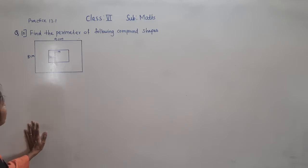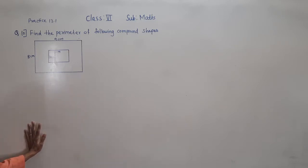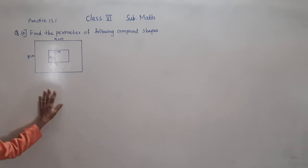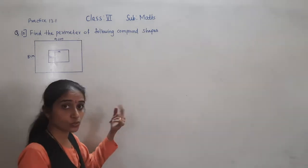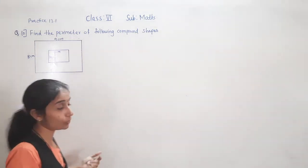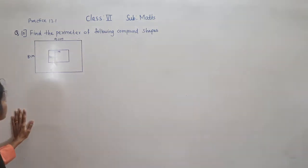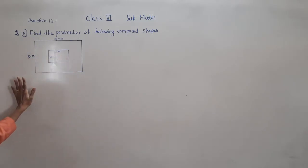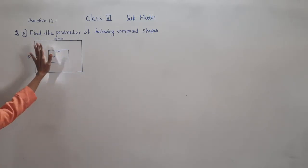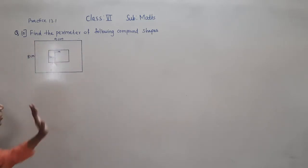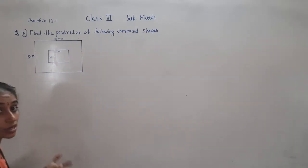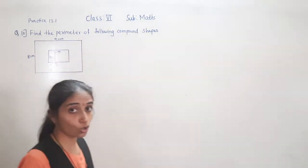Question number 10: find the perimeter of the following compound shapes. First one I will explain, second one you have to solve yourself. Now, this is the given compound shape. We have to find the perimeter. Perimeter is the distance around the closed figure.